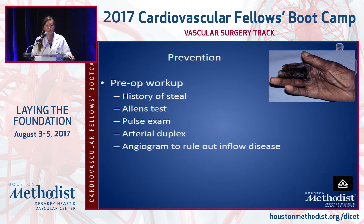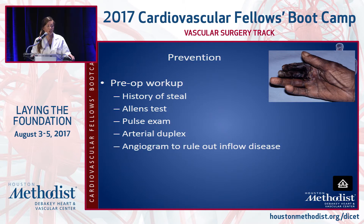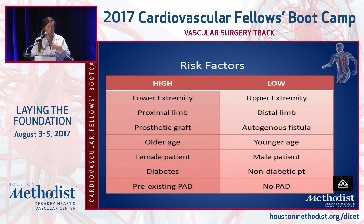When they come to your clinic, the first thing to do is try to prevent steel by knowing the risk factors. You want to ask them ahead of time about numbness and tingling in their hand, any previous accesses with steel symptoms. Perform your Allen's test, do a good pulse exam, check bilateral blood pressures, get a duplex, and then an angiogram if you feel there's some sort of inflow disease first. Risk factors include: if it's a graft, they're female, diabetic, or have pre-existing PAD.